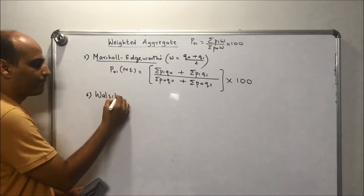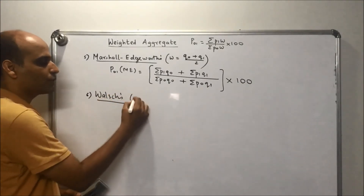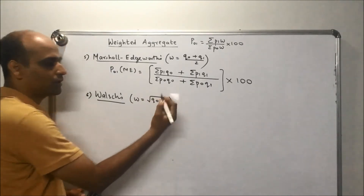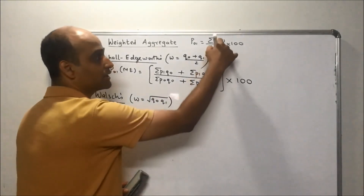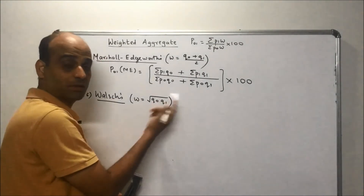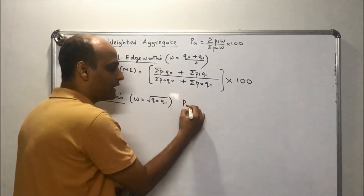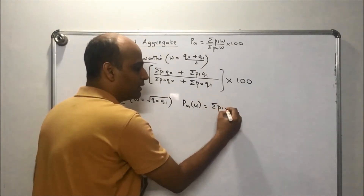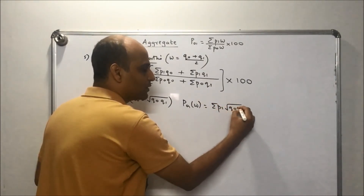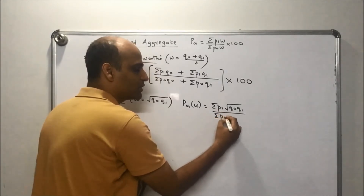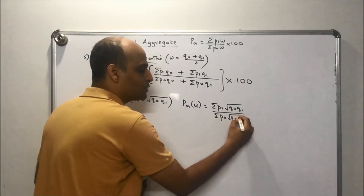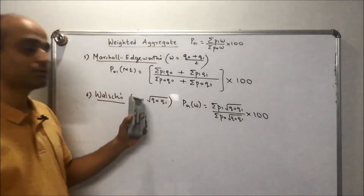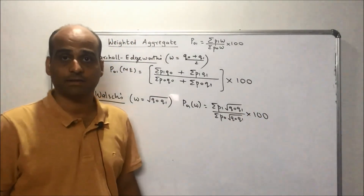Next is Walsh's index. In Walsh's index, the weightage is the square root of q0·q1. The formula is simply: summation p1·√(q0·q1) upon summation p0·√(q0·q1), multiplied by 100.